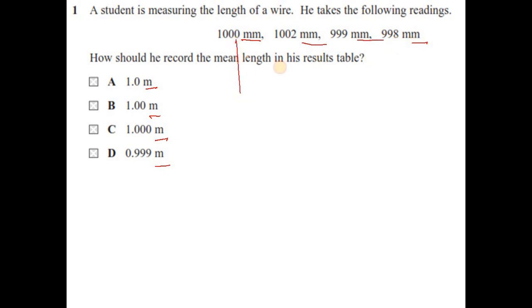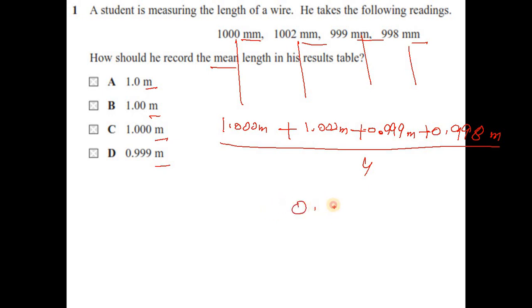So the first thing is we must convert these into meters after dividing by 1000. So we have 1.000m, 1.002m, 0.999m, 0.998m. It's all about the mean length, so you add all these four. There is no anomalous reading, so you include all 4 sets of values, dividing by 4. Then you will get answer 0.9975 meters.